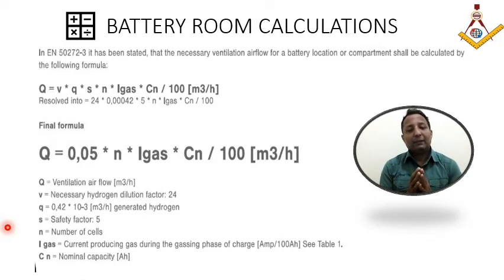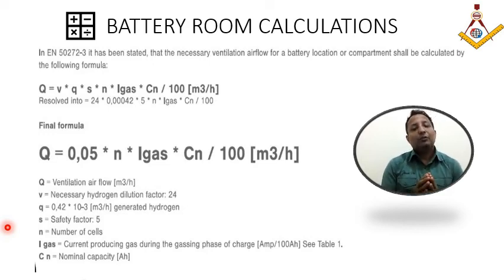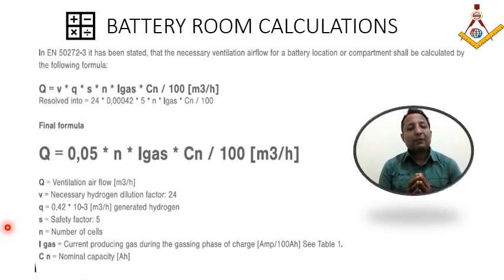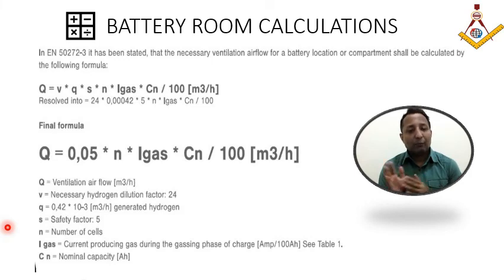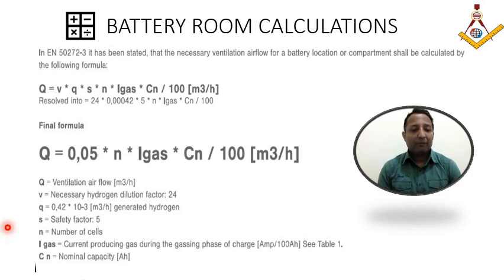Battery room being a hazardous area, any electrical equipment kept inside — for example, a fan or panel — needs to be suitable for Zone 1, gas group 2C, temperature class T3. I will cover this in detail in a subsequent session. Fan cost is also significantly higher in the battery room due to these requirements.